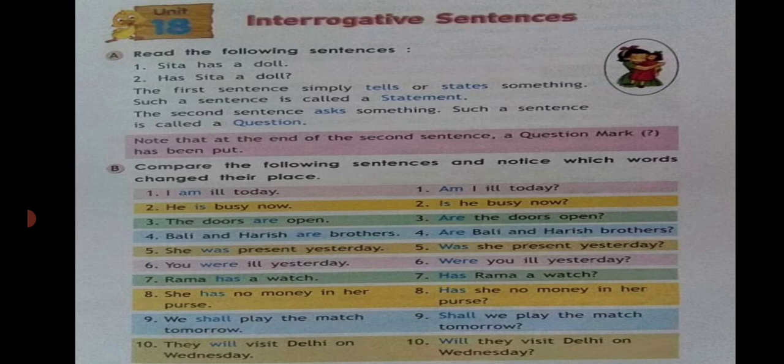The last example: 'They will visit Delhi on Wednesday.' — 'Will they visit Delhi on Wednesday?' Important note: in a question sentence, the verb is placed before the subject — noun or pronoun. For example, 'He is busy': 'is' is the verb, 'he' is the subject. So the verb is placed before the subject, noun or pronoun.